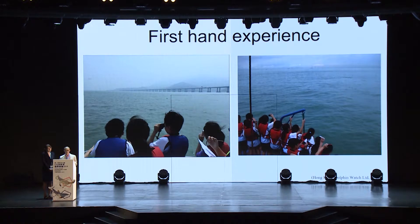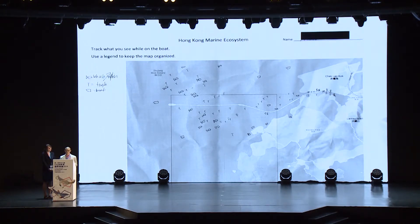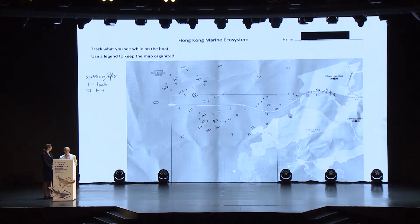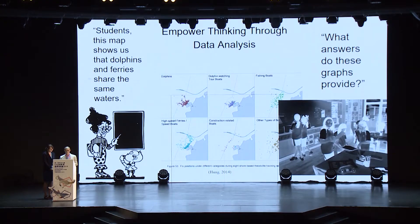Students went on a field trip to the Pearl River Delta, bringing binoculars, cameras, iPads, clipboards, their personal questions, and observation sheets. Students used these tools to keep a lookout for things they observed while out on the waters. Every time one student saw a piece of trash in the Pearl River Delta, she marked it off with a T, and used other symbols to indicate dolphins and boats. Back in the classroom, the thoughtful pre-teaching of skills meant students could analyze and interpret the collected data, and discussions could occur around the question: what answers do these graphs provide?